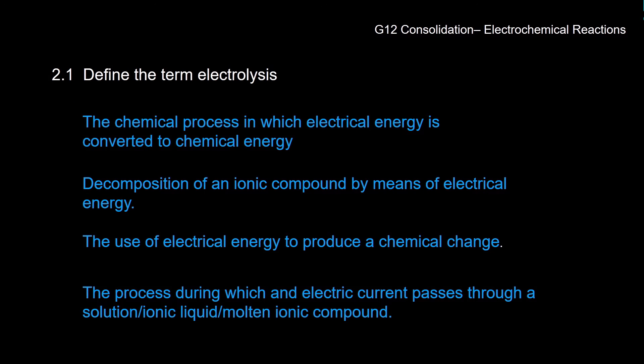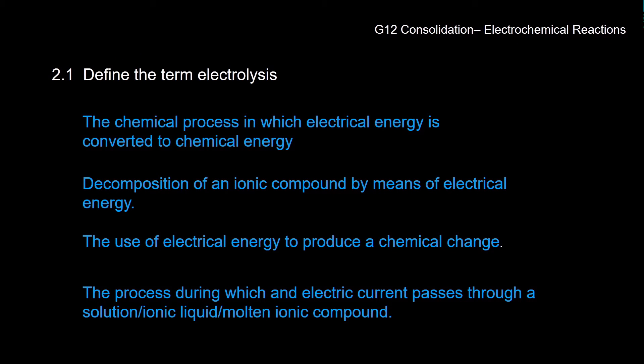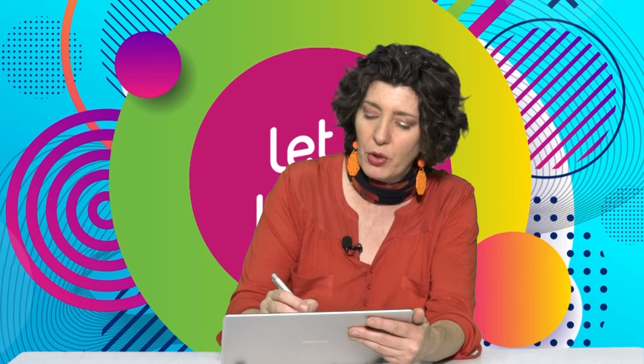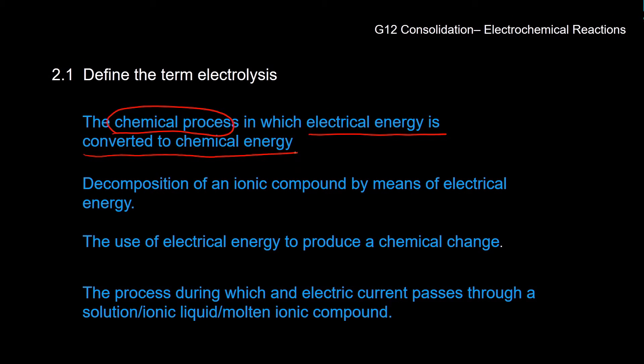Define the term electrolysis — this is one you need to know off by heart. Electrolysis is a chemical process. The difference between the electrolytic cell and electrolysis is that electrolysis must have the words 'chemical process' in the definition. It is the change of electrical energy into chemical potential energy. Electrical energy is converted to chemical energy — this is a very good definition and understanding of what is happening in the electrolytic cell via electrolysis.